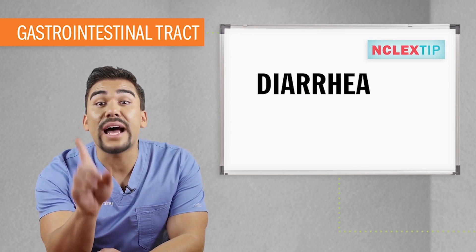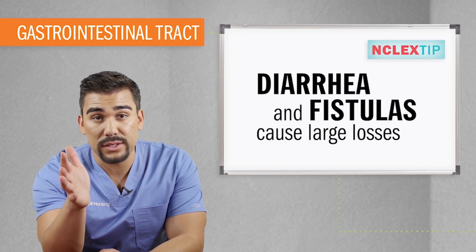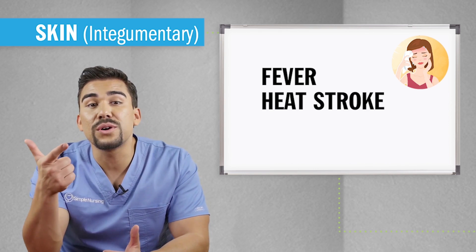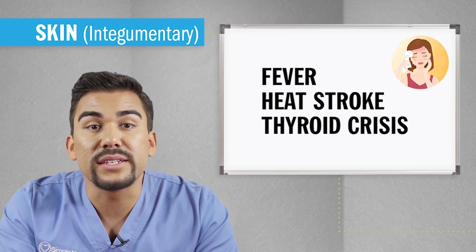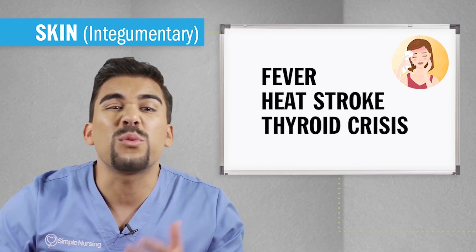Next is the GI tract — 100 to 200 mL daily is normal, even though approximately 8 liters of fluid is circulating in there. Important test tip: diarrhea and fistulas cause large fluid losses. For fluid loss through skin, also called sensible losses or sensible perspiration — this refers to visible water and electrolyte losses through sweating or diaphoresis, profuse sweating. The chief solutes in sweat are sodium, chloride, and potassium. This loss increases during fever, heat stroke, or thyroid crisis due to increased metabolism.